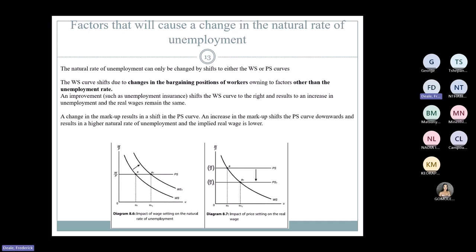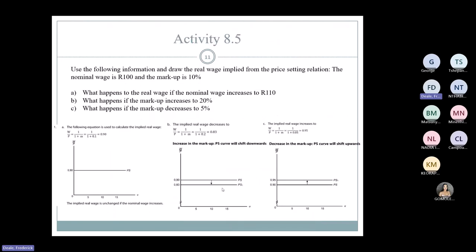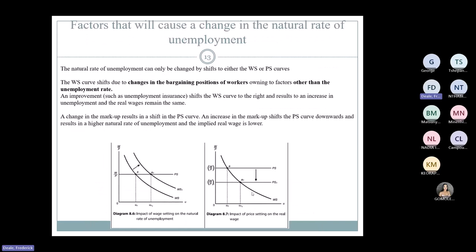A change in markup causes a shift in the PS curve. An increase in markup shifts the PS curve downward, decreasing the real wage and increasing the natural rate of unemployment — where the new intersection is at A1 rather than A. So the two big factors that change the natural rate of unemployment are: changes in bargaining position (shifts WS curve) and changes in markup (shifts PS curve).